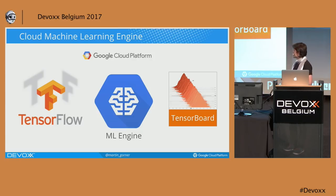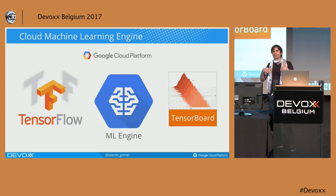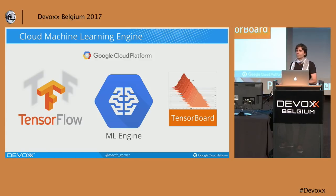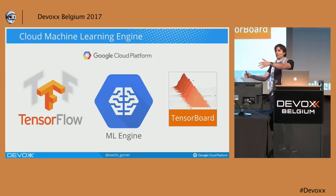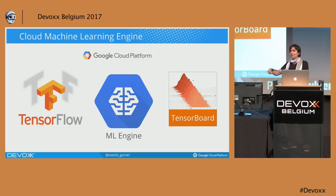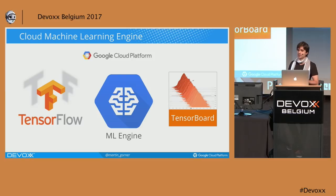ML Engine is a service on Google's cloud that allows you to run training jobs. You can launch as many jobs as you want. According to the quota you allow yourself — say 10 GPUs, each job using one — it will do them in parallel or queue them. You don't have to remember to shut it down at the end of the day. You just send jobs and see results.